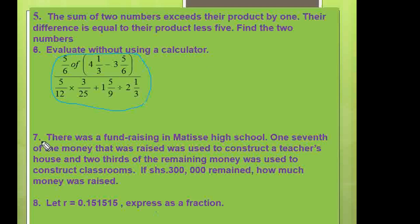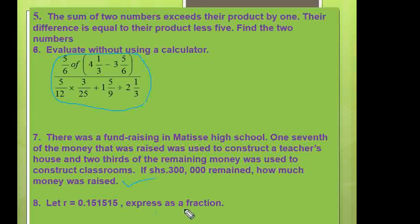Question number seven: there was a fundraising in Matissa High School. One-seventh of the money raised was used to construct a teacher's house and two-thirds of the remaining money was used to construct classrooms. If three hundred thousand shillings remained, how much money was raised? Question number eight: let R equal 0.151515... (where 15 is recurring) — express as a fraction.